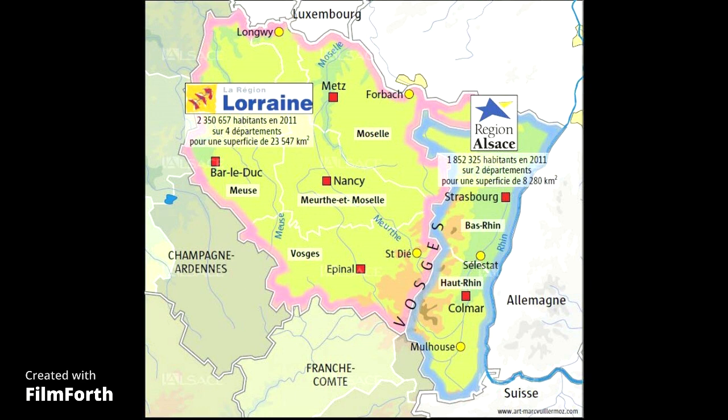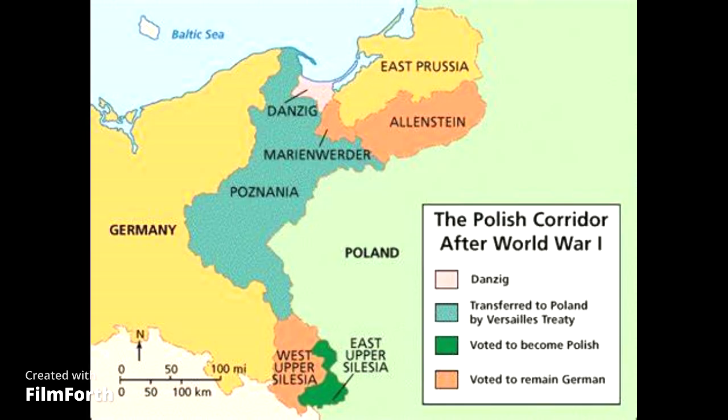Article 80: Anschluss was forbidden, meaning Germany was forbidden to unite with Austria. Article 87 stated that lands in eastern Germany — the rich farmlands of Posen and the Polish Corridor between Germany and East Prussia — were to be given to Poland to give them access to the sea, which was part of Wilson's 14 Points. Article 100 made Danzig a free city under the League of Nations, which after World War II would be renamed to Gdansk, where many significant historical events would occur, most notably Solidarity.